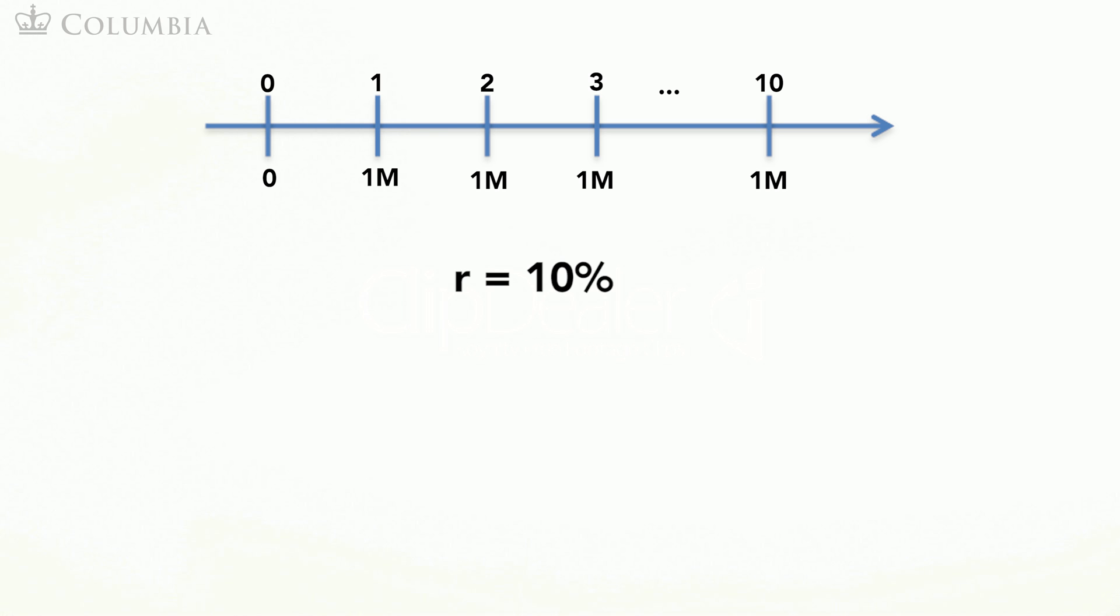Assume a discount rate of 10%. Clearly, the value of the $10 million price today will be lower than $10 million as you will not be receiving the money immediately.